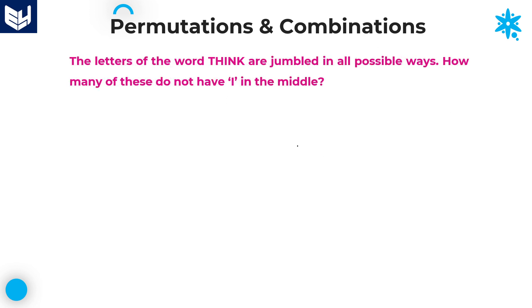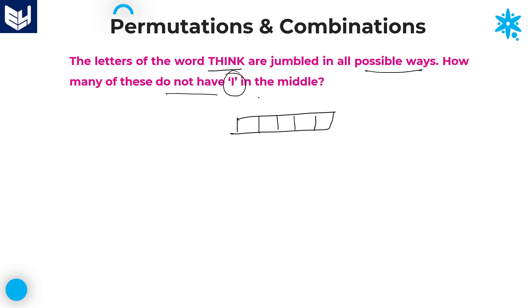Let's move on to the next question. The letters of the word THINK — which is a 5-letter word — are jumbled in all possible ways. In how many of these arrangements does the letter 'i' not appear in the middle position?